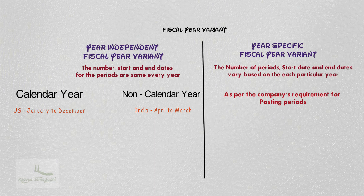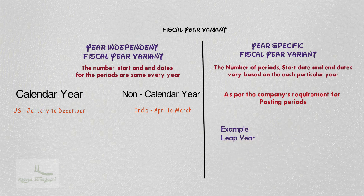The start and end dates are as per the company's requirement for posting periods, not based on the calendar year. In some implementations I have worked on — especially for Middle East countries — they follow a separate calendar where sometimes one calendar month maps to two periods. In such cases we use the year-specific fiscal variant. Another example is the leap year: whenever February has 29 days instead of 28, on such years we use the year-specific fiscal variant.